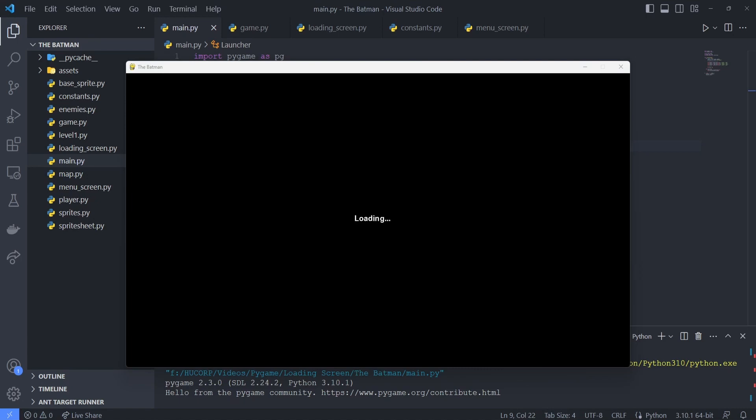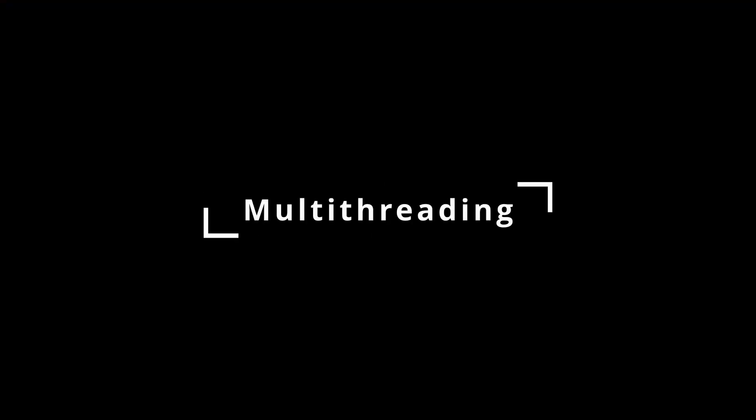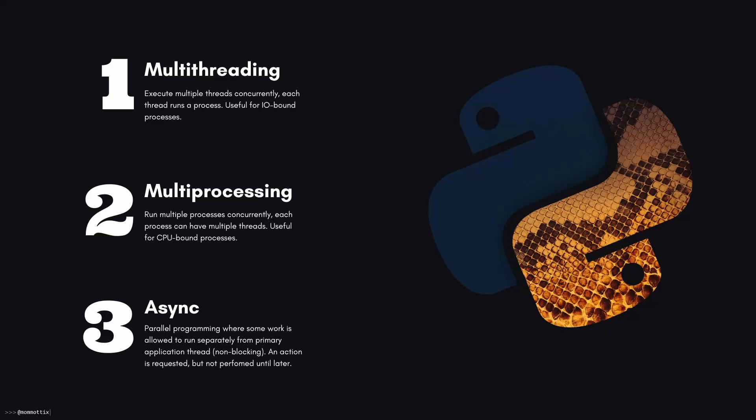Our next objective is to actually load our assets while the screen is being displayed. We want to update our loading screen to show progress while our assets are being loaded in the background. To perform both of these tasks at the same time, we need some form of concurrency. That means that we basically have three options to implement this: the first is multiprocessing, where we have multiple processes set up; the second is multithreading, where we have more than one thread running at a time; and the last option is to use asynchronous code.